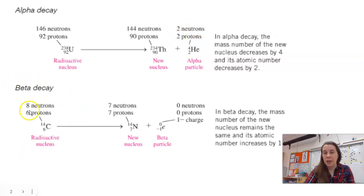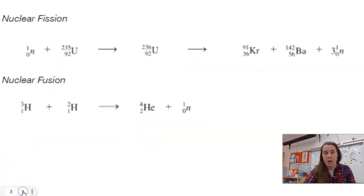For beta decay, we emit a beta particle, which is always one of our products. It looks just like an electron. The thing that's strange about a beta particle is it comes from the nucleus, which we know is not where electrons are, and that's because we're converting a neutron into a proton. That's where that negative charge comes from. When that happens, we add an additional proton in the nucleus, but the mass doesn't change because the number of particles in the nucleus remains the same.